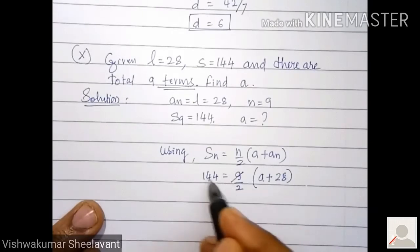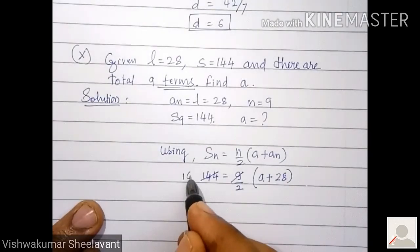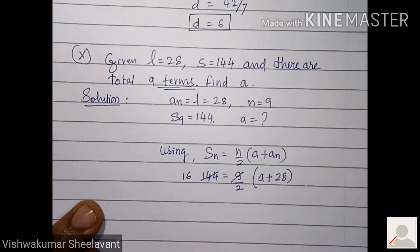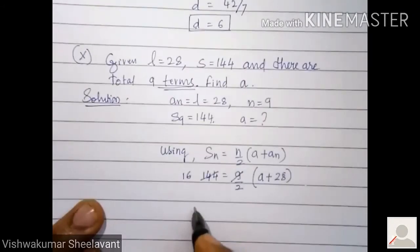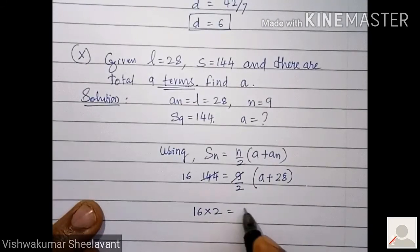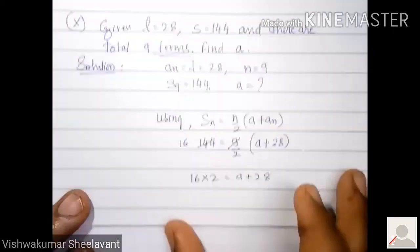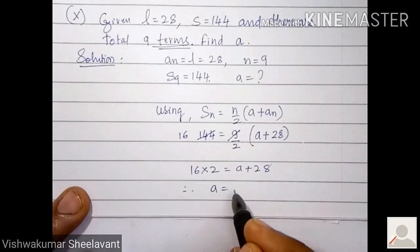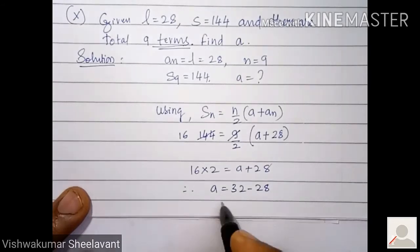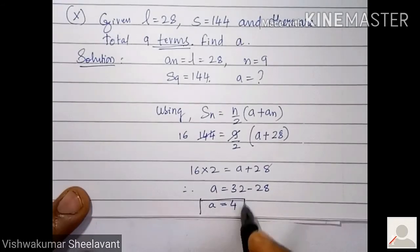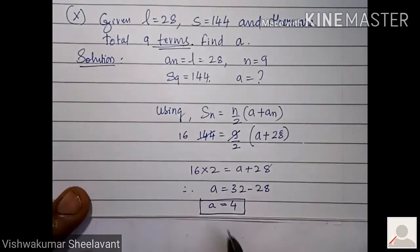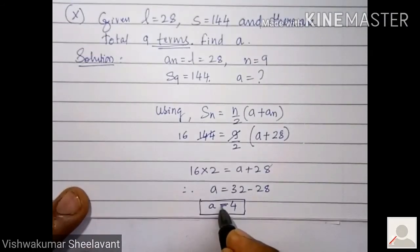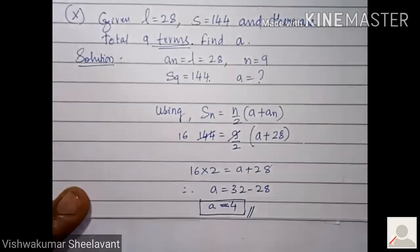9 into 16 is 144. Now 16 into 2 equals a plus 28. Therefore a equals 32 minus 28, so a equals 4.